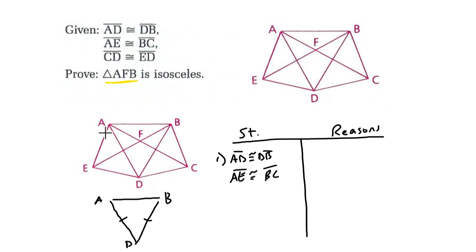So AE is congruent to BC. Where's that? Here's AE, and here's BC. I'm not sure I'm going to use that yet. But I noticed that those two sides are not a part of this triangle right here. And then CD is congruent to ED. All right, so the reasons for all of that is that we're given that those things are true.